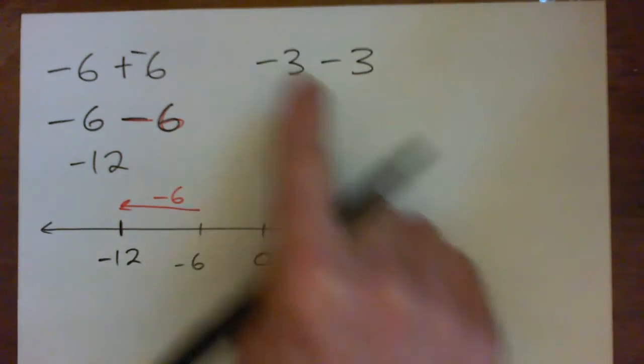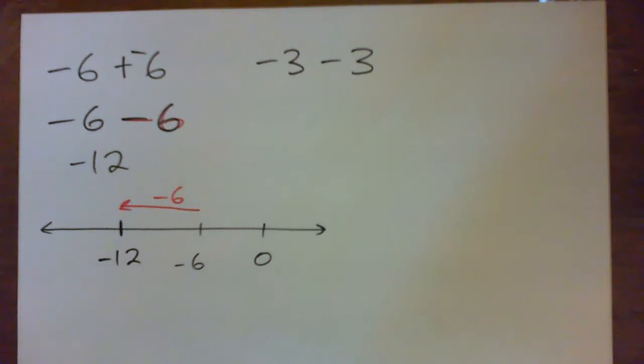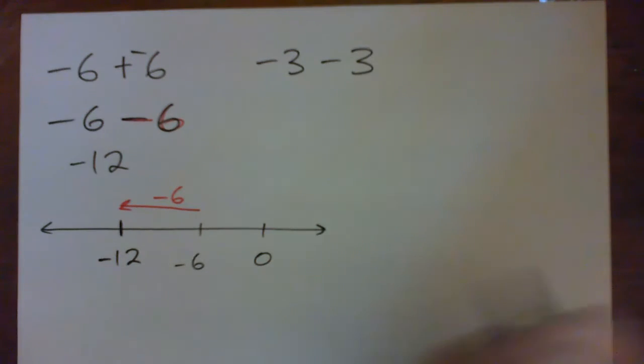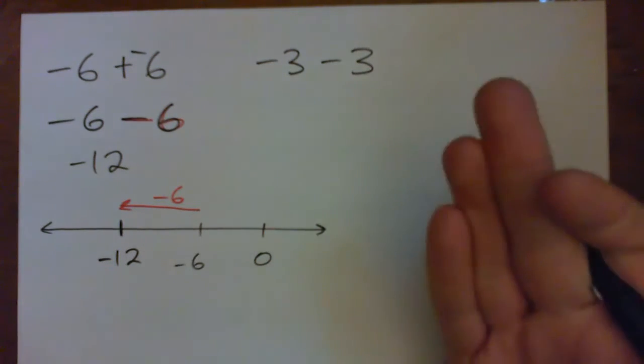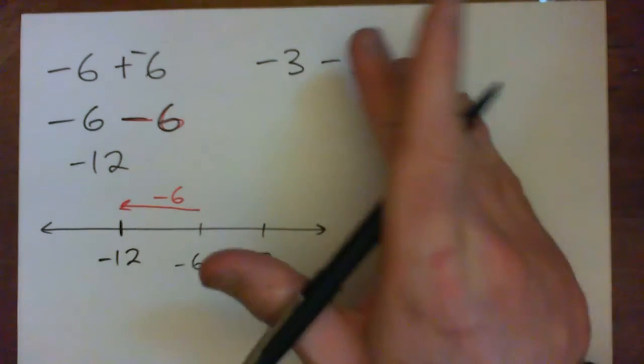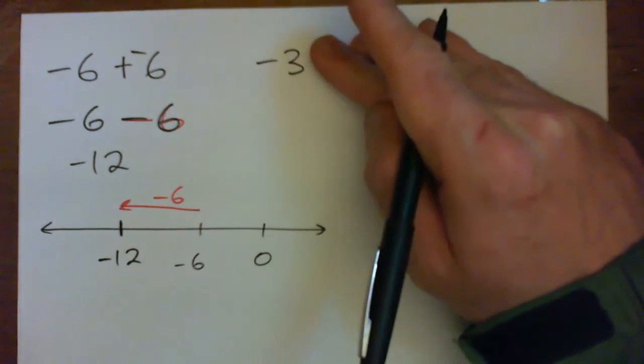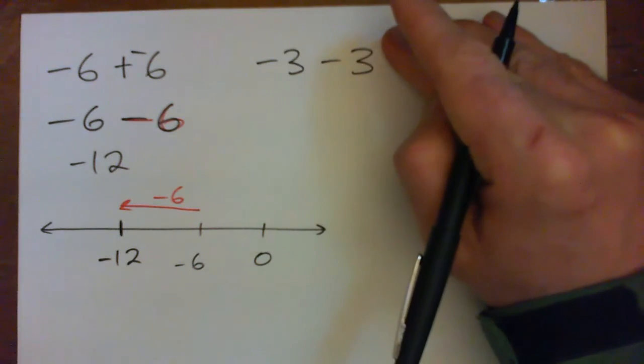So do this one. Press pause and do it yourself: negative three minus three. Okay, I'll do it with you now. A few ways of thinking about it: my bank account, I'm in debt by three dollars, I spend three dollars, now I'm in debt by six dollars.